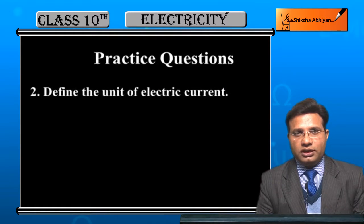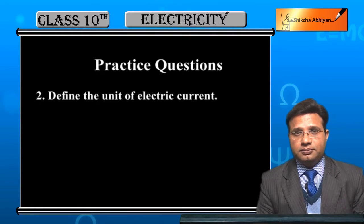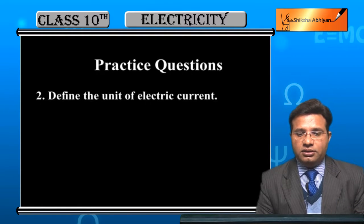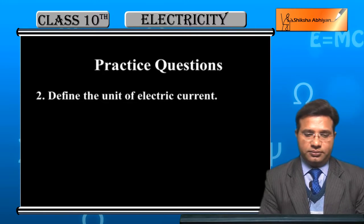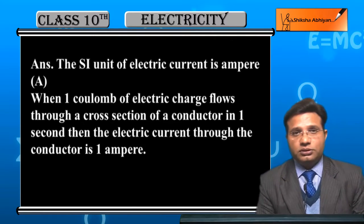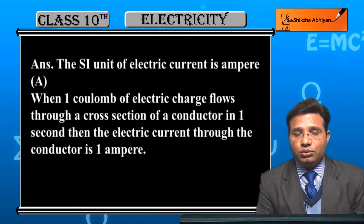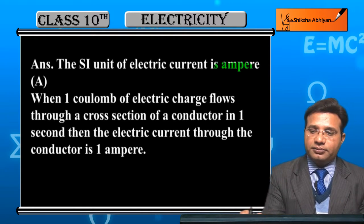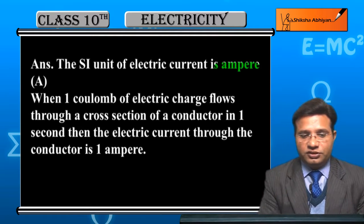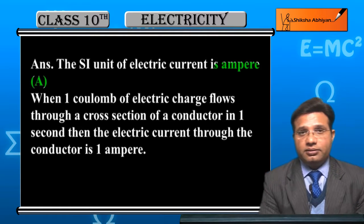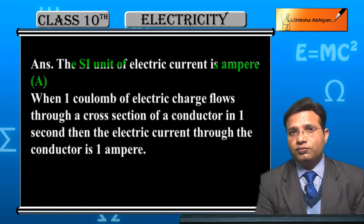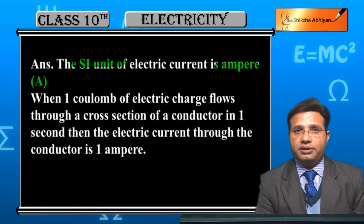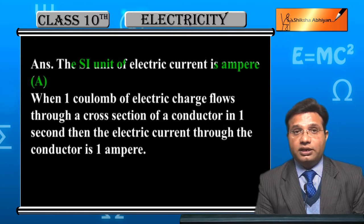Now students, we will do another question — second question for this concept: electric current. Define the unit of electric current. The SI unit of electric current is Ampere, which is denoted by capital A. SI unit means Standard International unit. The unit of current is Ampere.